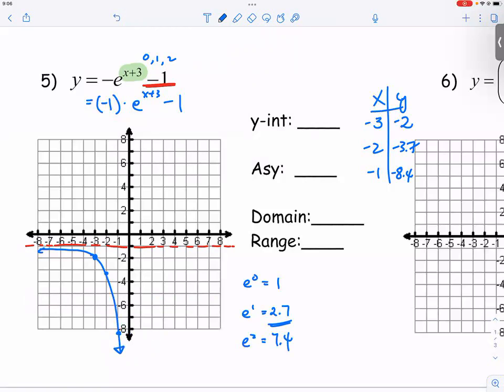So y is equal to negative 1 for the asymptote. The domain is negative infinity to infinity. And the range is from negative infinity all the way to negative 1.